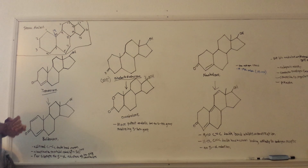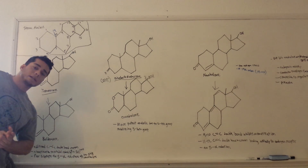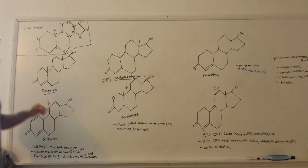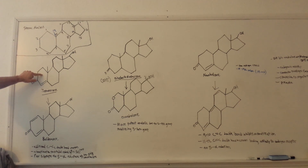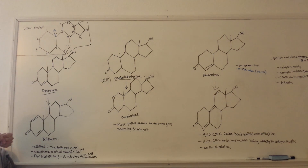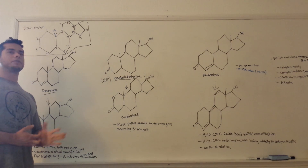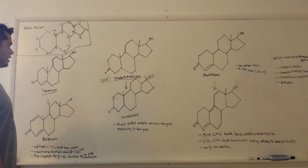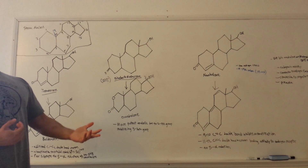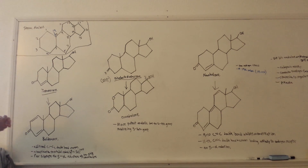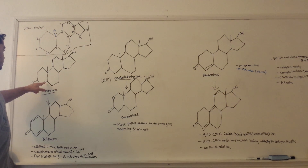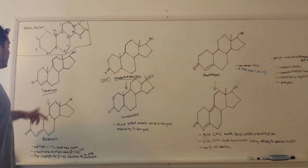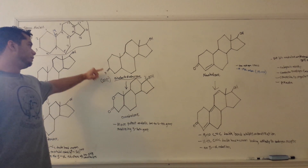With testosterone we commonly see conversion to estrogen via the aromatase enzyme. What the aromatase enzyme does is aromatize the A ring — it adds two more double bonds, making it aromatic. That's where the term aromatization comes from, as you can see in the structure of estradiol. Another key reaction is the reduction of the C4-5 double bond by 5α-reductase to produce DHT.